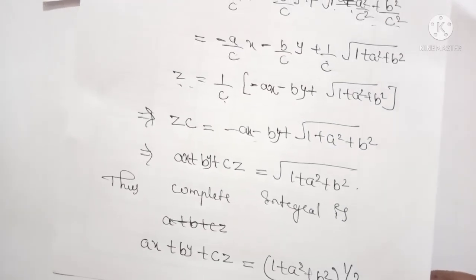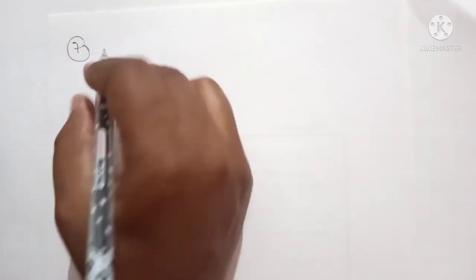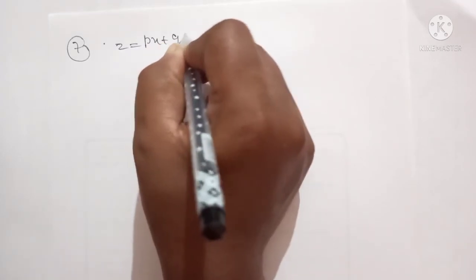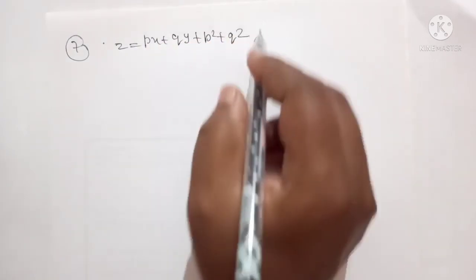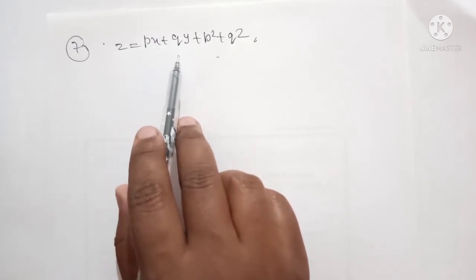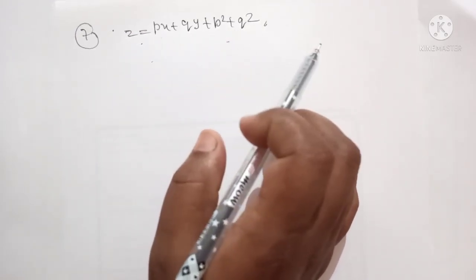Like this, we can solve the type 4 nonlinear PDE, that is the standard form called Clairaut's form, whose complete solution is obtained by simply replacing P by A and Q by B in the given equation. Try this problem by yourself: find the complete solution of Z equals PX + QY + P² + Q². The answer will be Z equals AX + BY + A² + B².